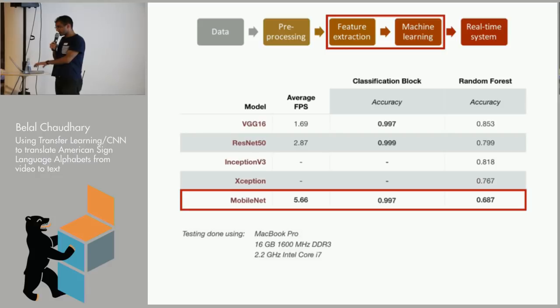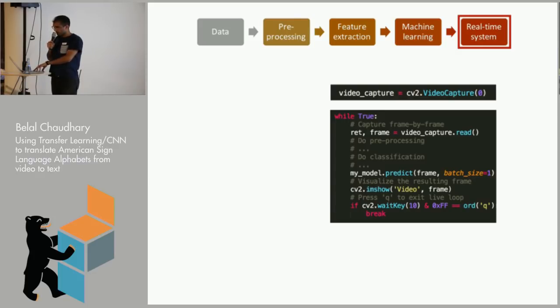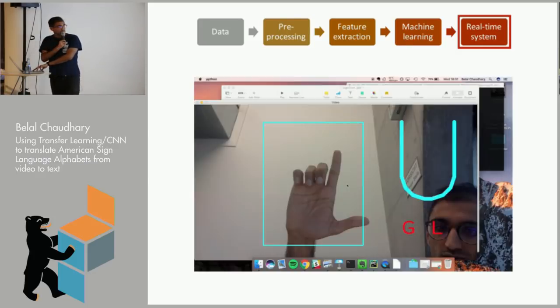So I went ahead, and I took the MobileNet architecture, and I included that into my demo system. Again, going through the same loop, so capturing a video, doing the prediction and visualizing. It's all on GitHub if you want to try it out, the weights are up there. I made a quick video, just to give you an example.